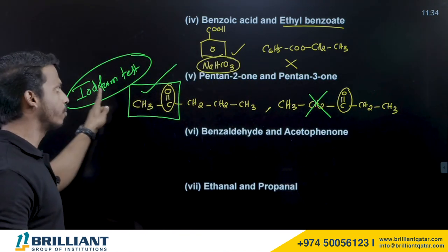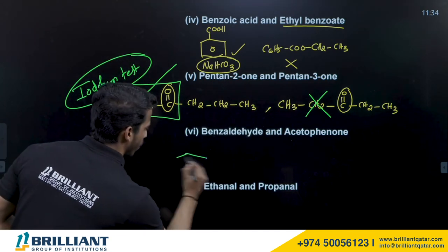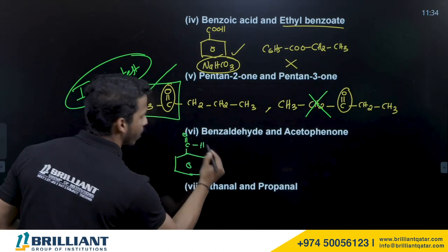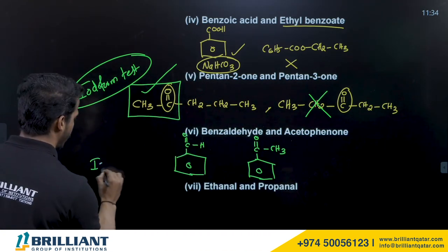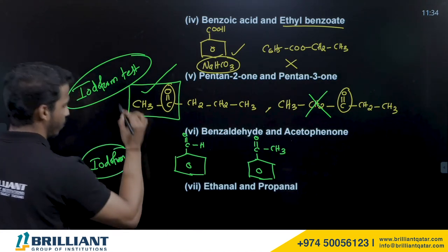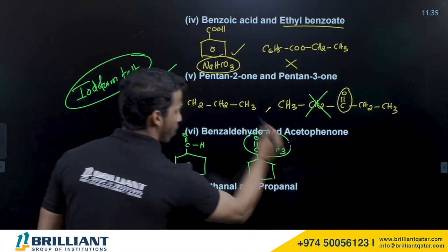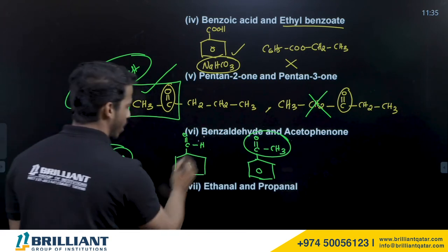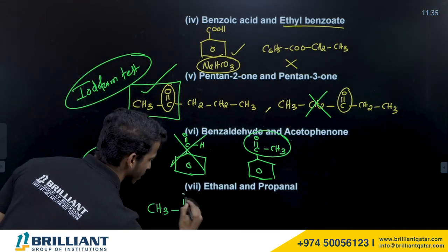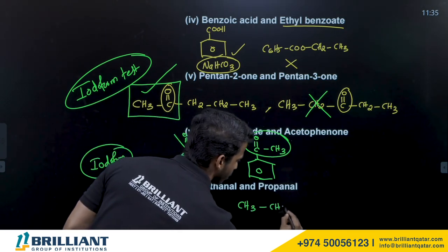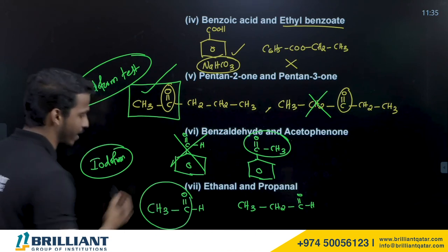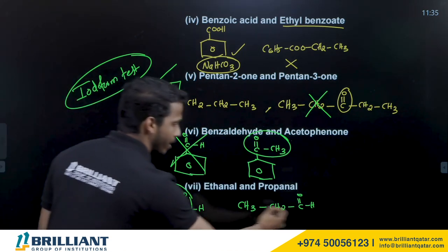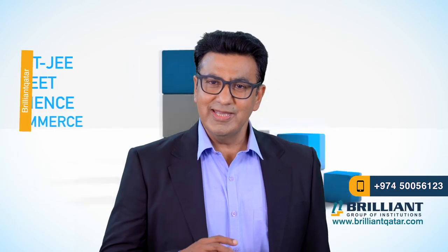(6) Benzaldehyde vs. acetophenone — use iodoform test. Acetophenone contains the CH3CO group and gives a positive iodoform test; benzaldehyde does not. (7) Ethanal vs. propanal — use iodoform test. Ethanal contains the CH3CO group and gives a positive result; propanal does not have that group and gives a negative result.